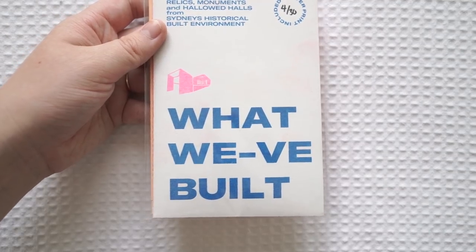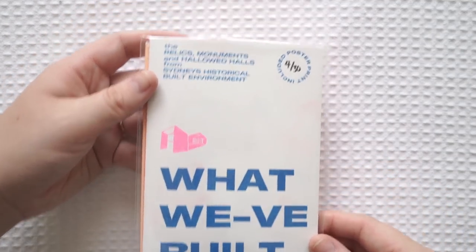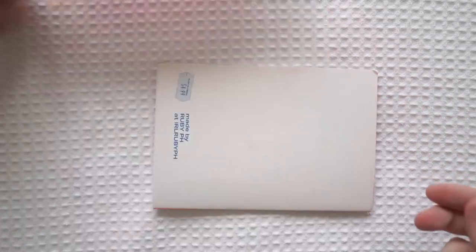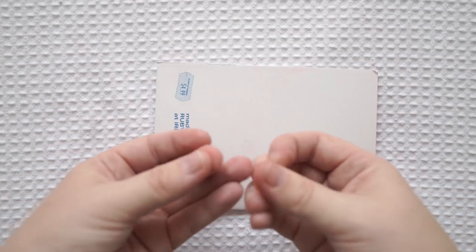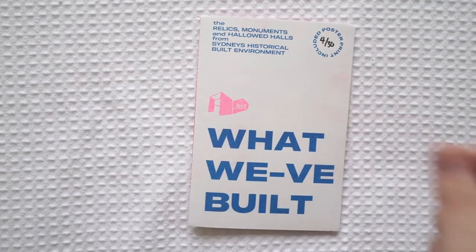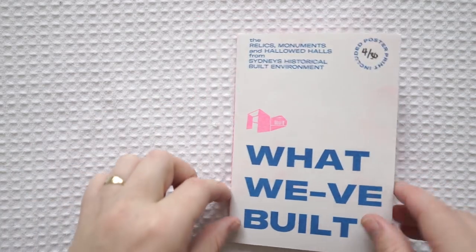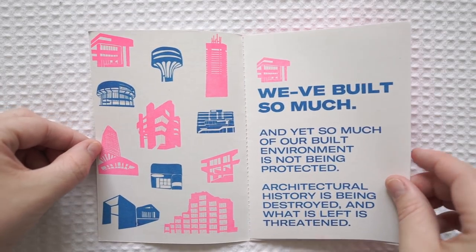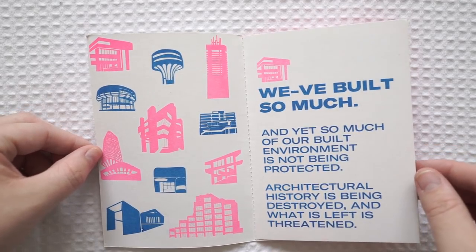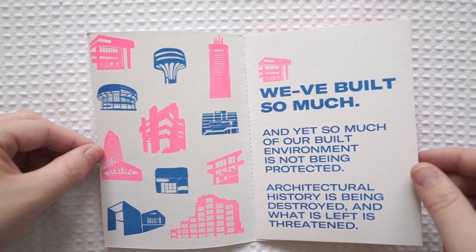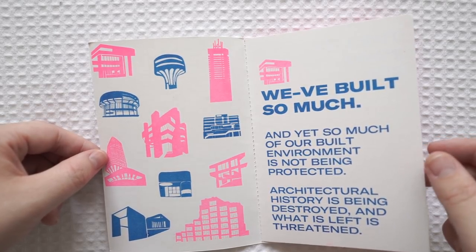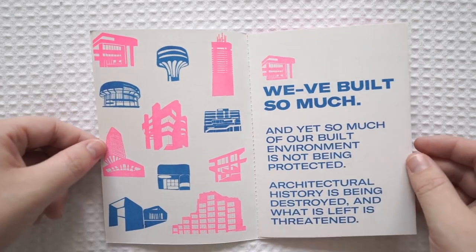So next, this one actually tells a little bit of a story. So What We've Built and it actually comes with a little poster at the back, but it gets on my fingers. I don't know if you can see, but I'm not going to open it or open it at the very end. So very, very cute. I'll flip through it. And basically it's about the architecture around Sydney and it's the ones that are threatened, the ones that are protected and also the ones that I think have been destroyed. Yeah, it says it just there.